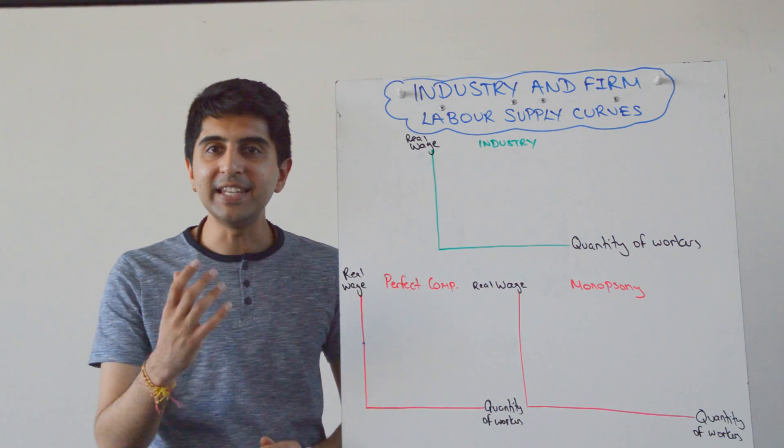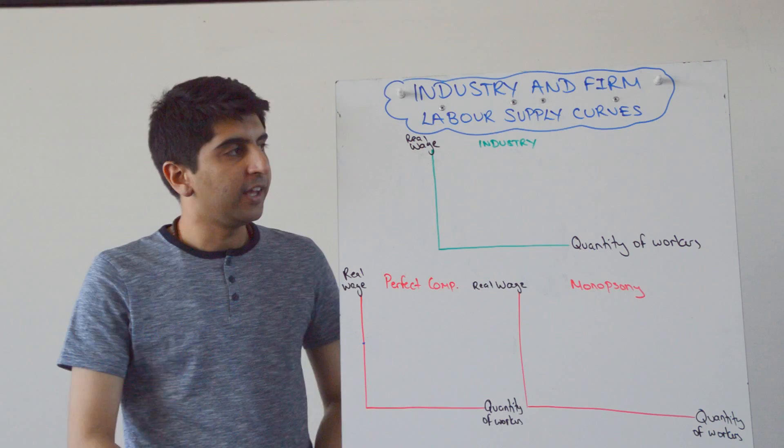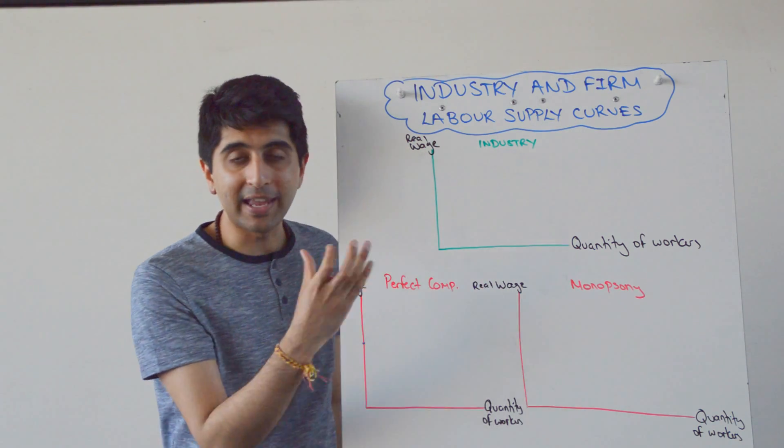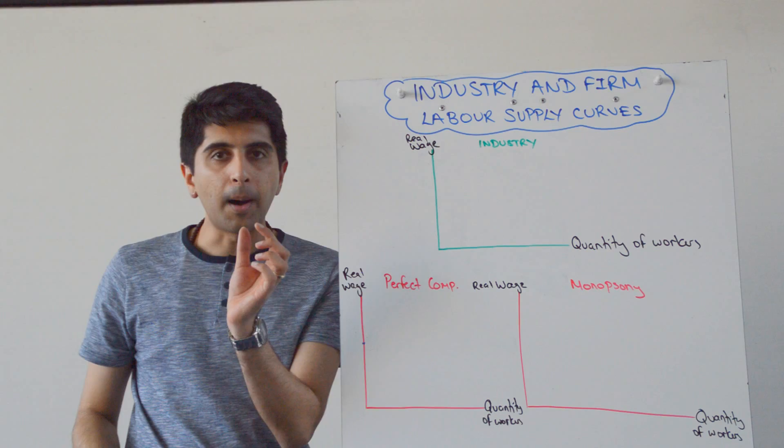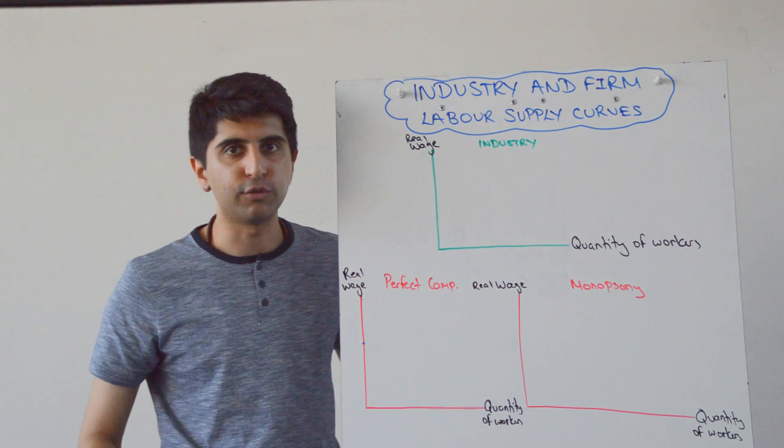Hi everybody, you've understood the individual labour supply curve as backward bending, but in truth, the industry labour supply curve and supply curves for labour for individual firms are more useful and more relevant for you. So pay attention as we go through this.